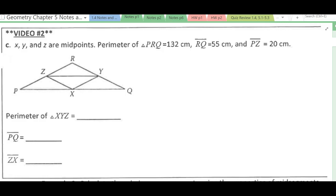Let's take a look and see what we have given here. We have that X, Y, and Z are midpoints, so let's go ahead and mark that. So these are going to be congruent, and these are going to be congruent.